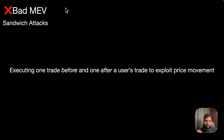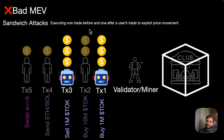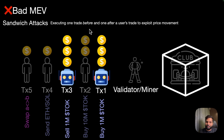Now comes sandwich attack, where one trade is executed before and one trade is executed after a user's trade to exploit price movement. In this case, the bot is again listening for TOK token buy transactions, and as soon as it detects a buy transaction, it will front-run it by sending its own transaction with higher gas fee. The user's transaction then comes through, and after the user's transaction, the bot sends another transaction to sell those tokens. The bot generated profit by buying and selling the tokens, but the user was at a loss because they got bad pricing due to the bot's front-run transaction.